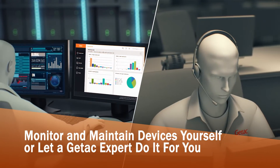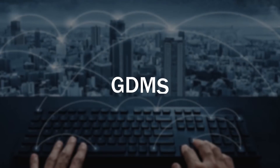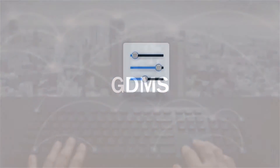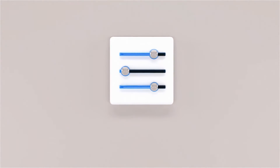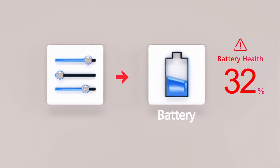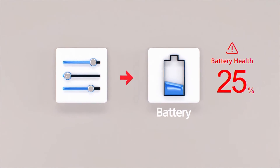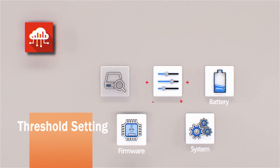GDMS monitors key functions of your deployed devices and will alert you if threshold settings are triggered. Monitored functions include battery health, system performance, and firmware updates.